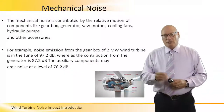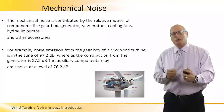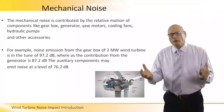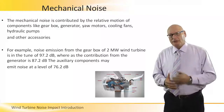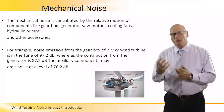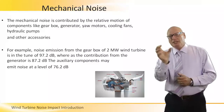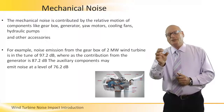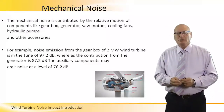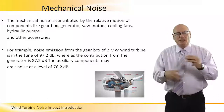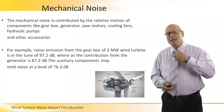Mechanical noise is contributed by the relative motion of components like the gearbox, generator, motors, cooling fans, hydraulic pumps, and other accessories — we are talking about a dynamic mechanical system where the rotor rotates and all kinds of mechanical interactions occur. For example, noise emission from the gearbox of a 2 megawatt wind turbine is in the order of 97.2 decibels, whereas the contribution from the generator itself is 87.2 decibels. All auxiliary components may emit noise at the level of 76.2 decibels — that's a very high level of noise because the system is mechanically dynamic.